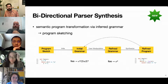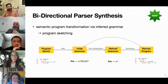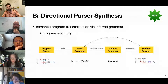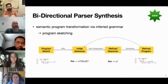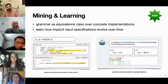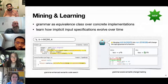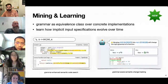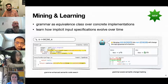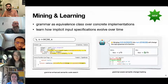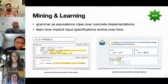Another new possibility would be bidirectional parser synthesis. When you combine grammar inference with existing parser generation techniques, you can do semantic program transformation — for example, grammar-based program sketching. You start with an incomplete program, use grammar inference to get an initial grammar that the user can manipulate, and then the refined grammar can be synthesized into a refined program. We also envision applications in code mining: because a grammar is an equivalence class over concrete implementations, it allows grouping parser implementations with similar semantics for grammar-based code search or semantic change tracking.